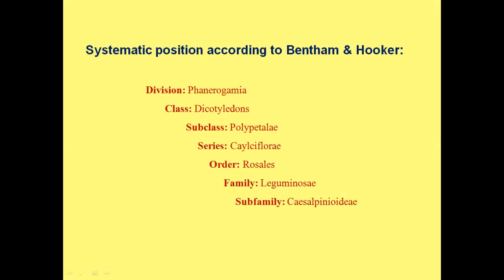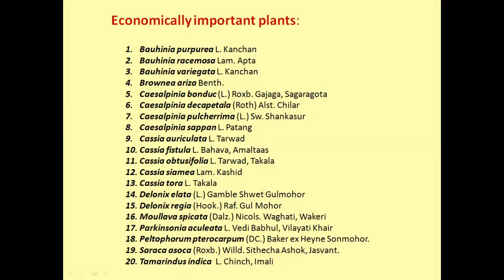Now we will see the systematic position according to Bentham and Hooker: Division Phanerogamia, Class Dicotyledons, Subclass Polypetalae, Series Calyciflorae, Order Rosales, Family Leguminosae, Subfamily Caesalpinioideae. There are many economically important plants present in this family.